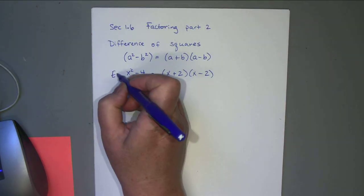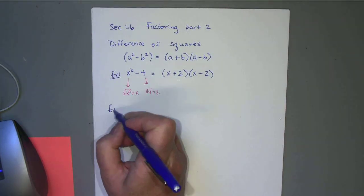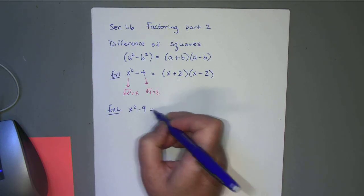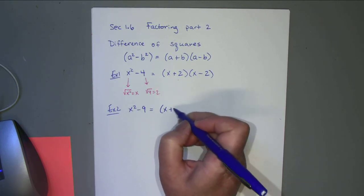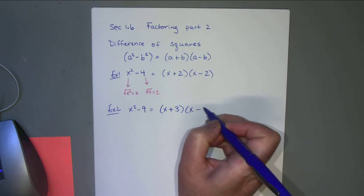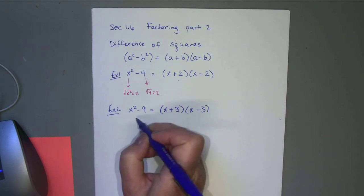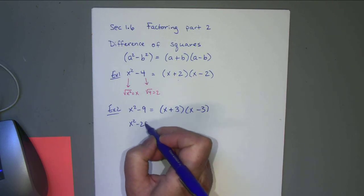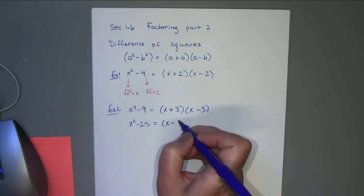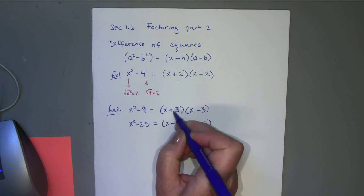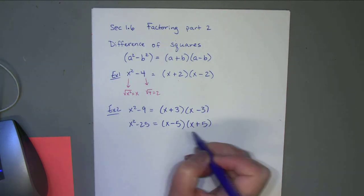Example one: x² minus 4 factors as (x+2)(x-2). Example two: x² minus 9 factors as (x+3)(x-3). You can also write it in the opposite order. For example, if we had x² minus 25, you could write (x-5)(x+5) instead of plus first and then minus. So the order doesn't matter.